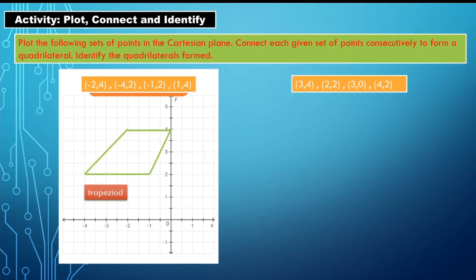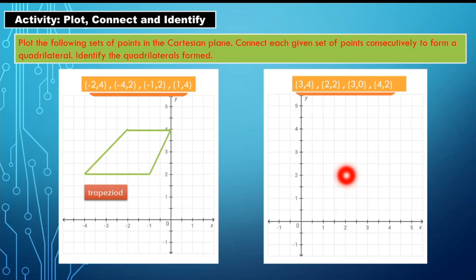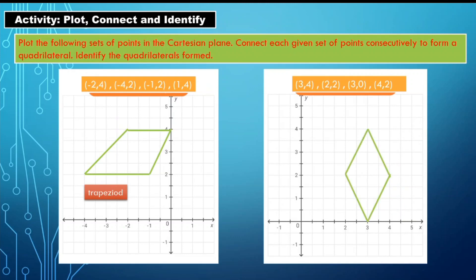Number four: points at (3, 4), (2, 2), (3, 0), and (4, 2). Point (3, 4) is in quadrant one. Locating (2, 2) as the second point, (3, 0) as the third, and (4, 2) as the last, then connecting them — what quadrilateral is formed? Yes, you are right. That is a rhombus.